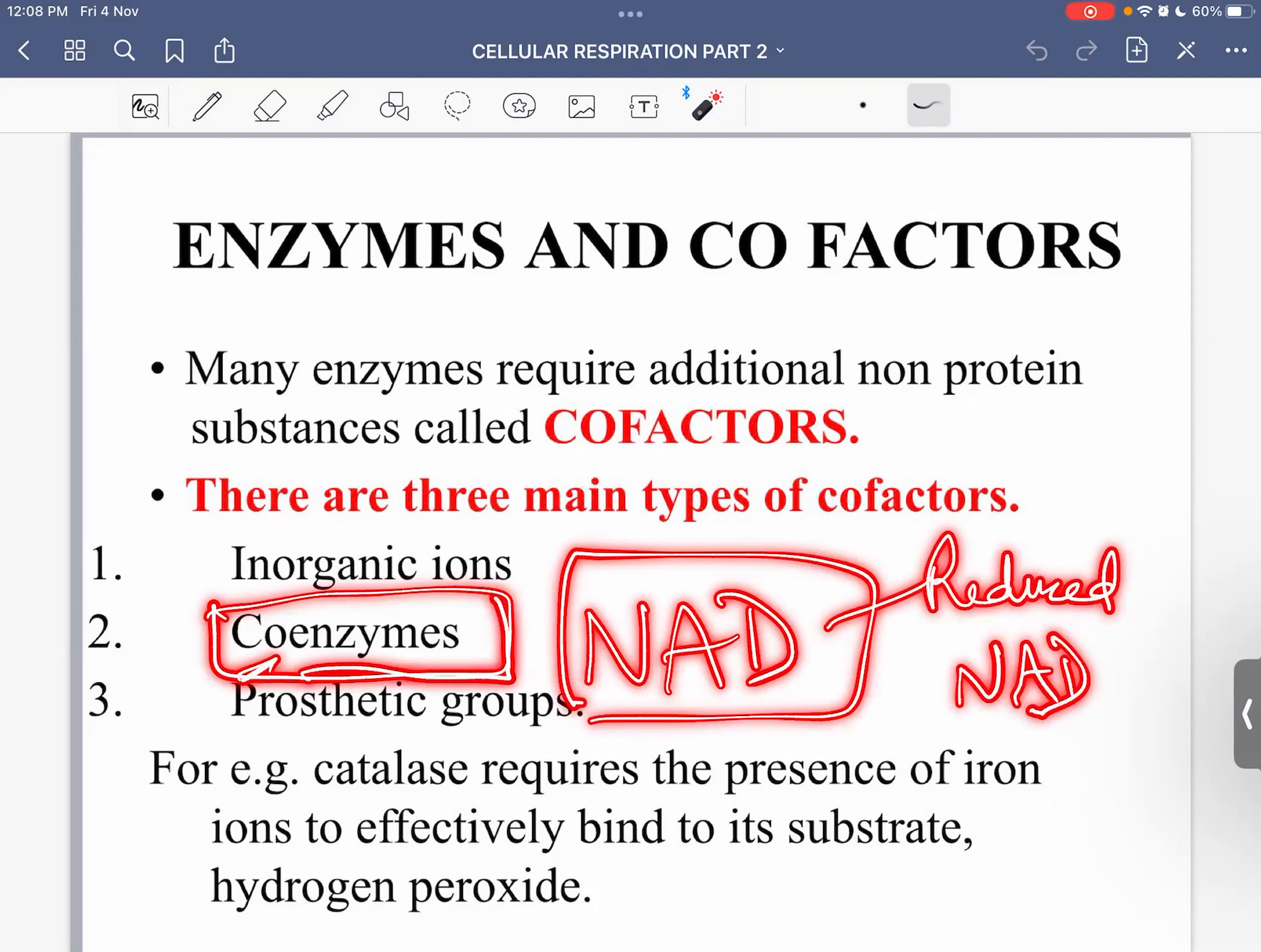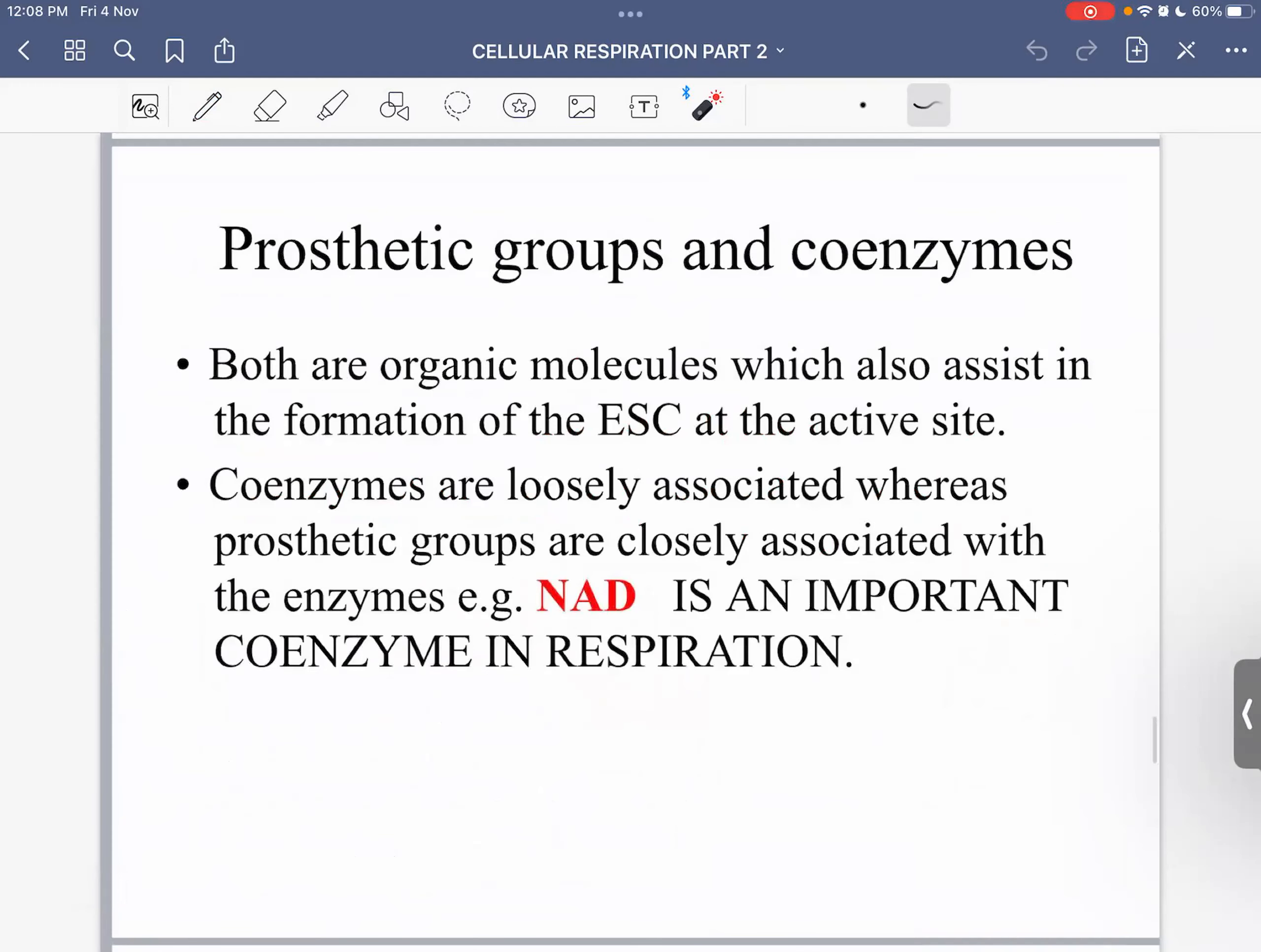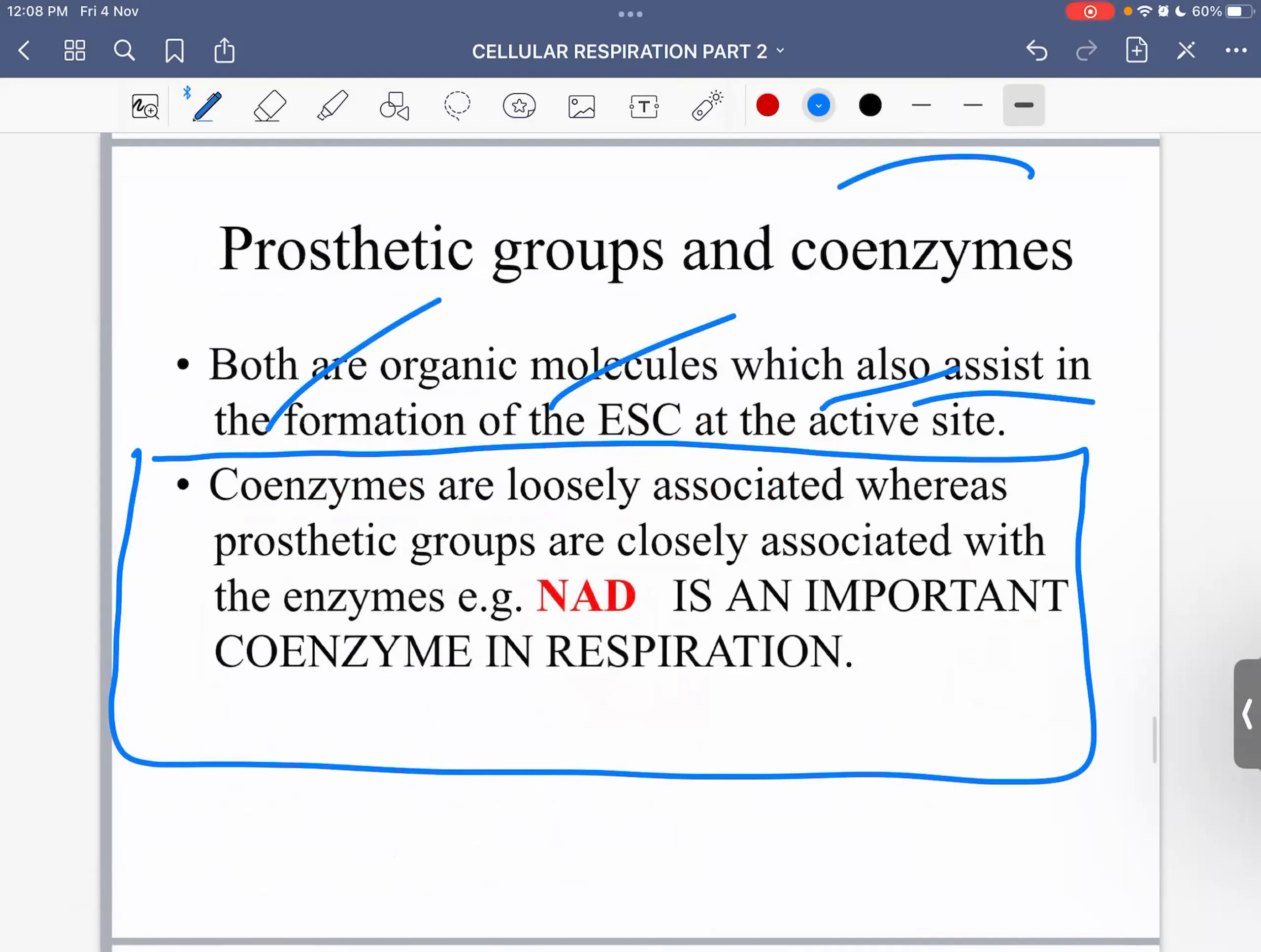I'm not going into the details - I am bothered about this because we are doing NAD. So structurally NAD is a coenzyme. Why do we call it 'co'? Because it is loosely associated to an enzyme - loose molecular association with an enzyme.